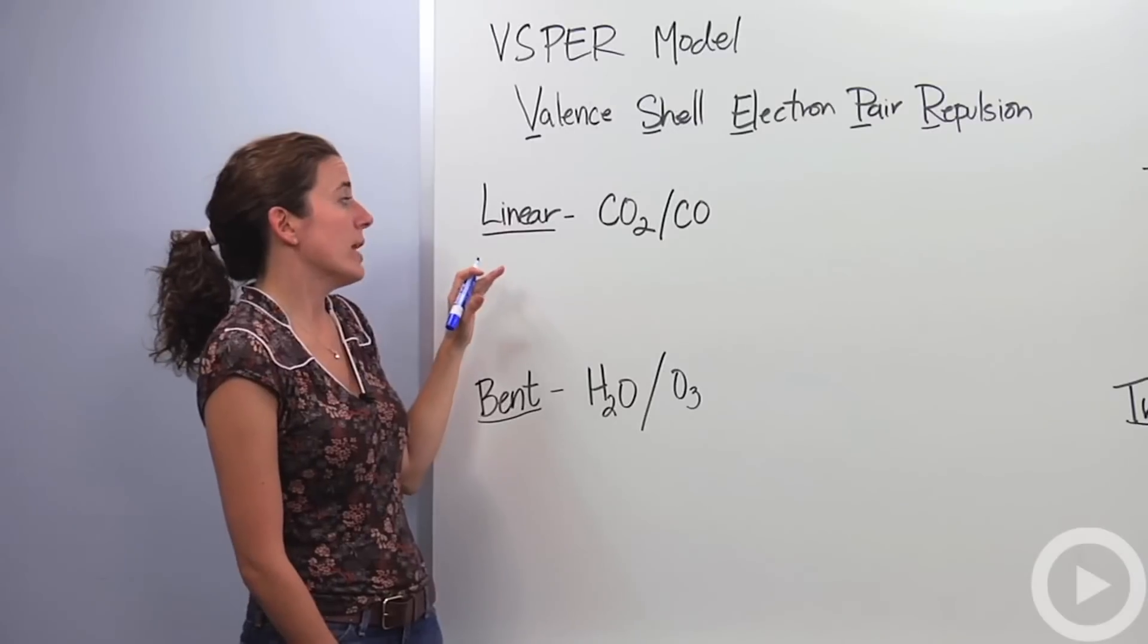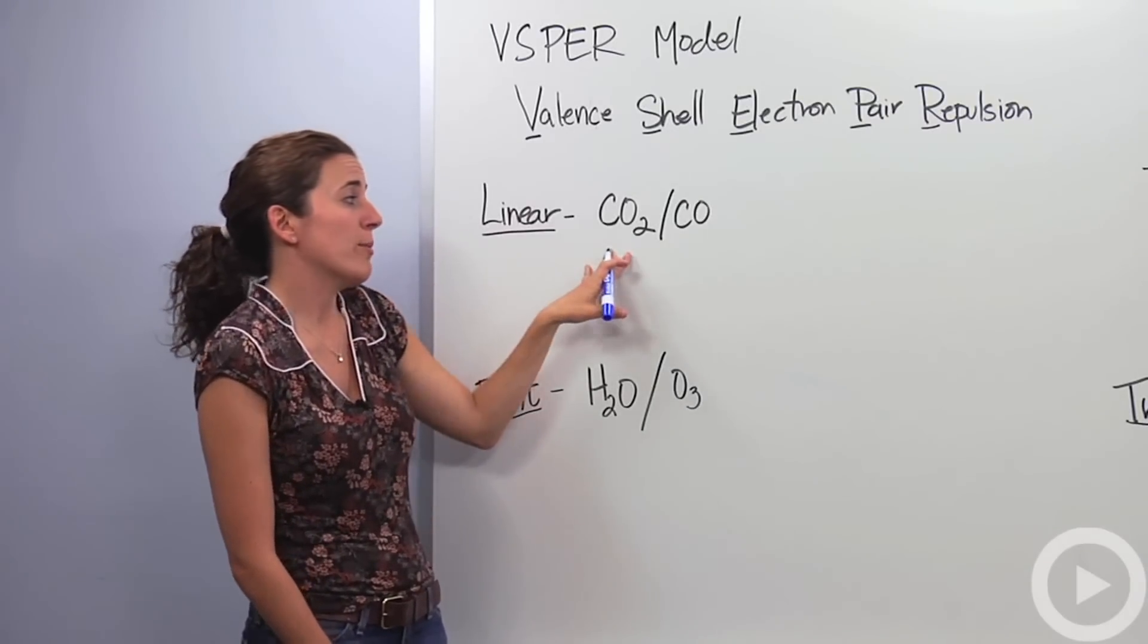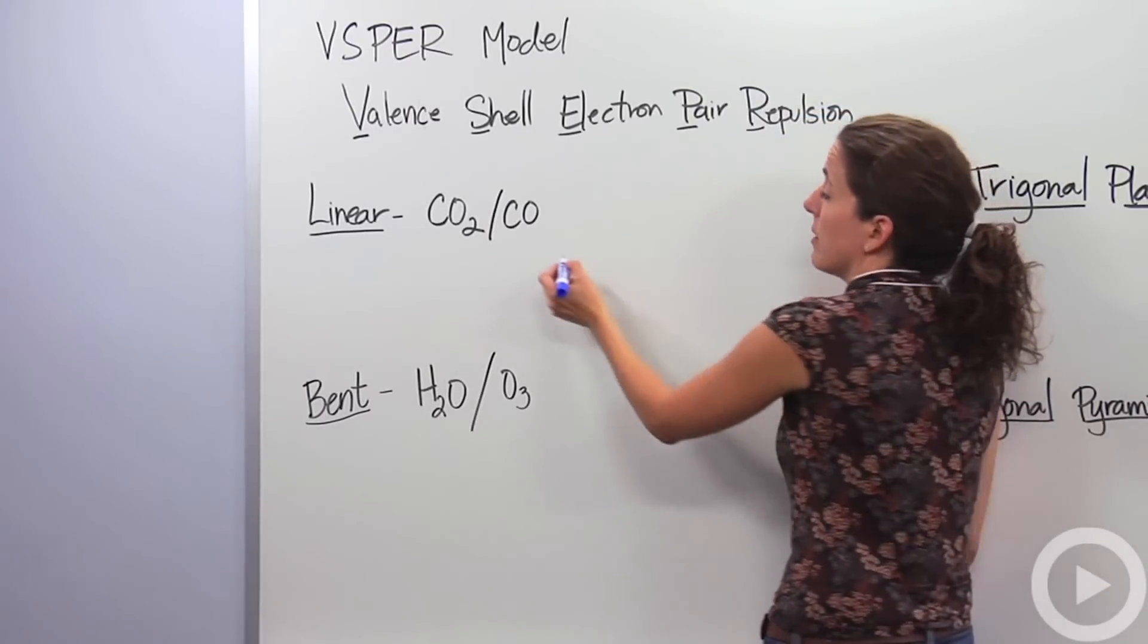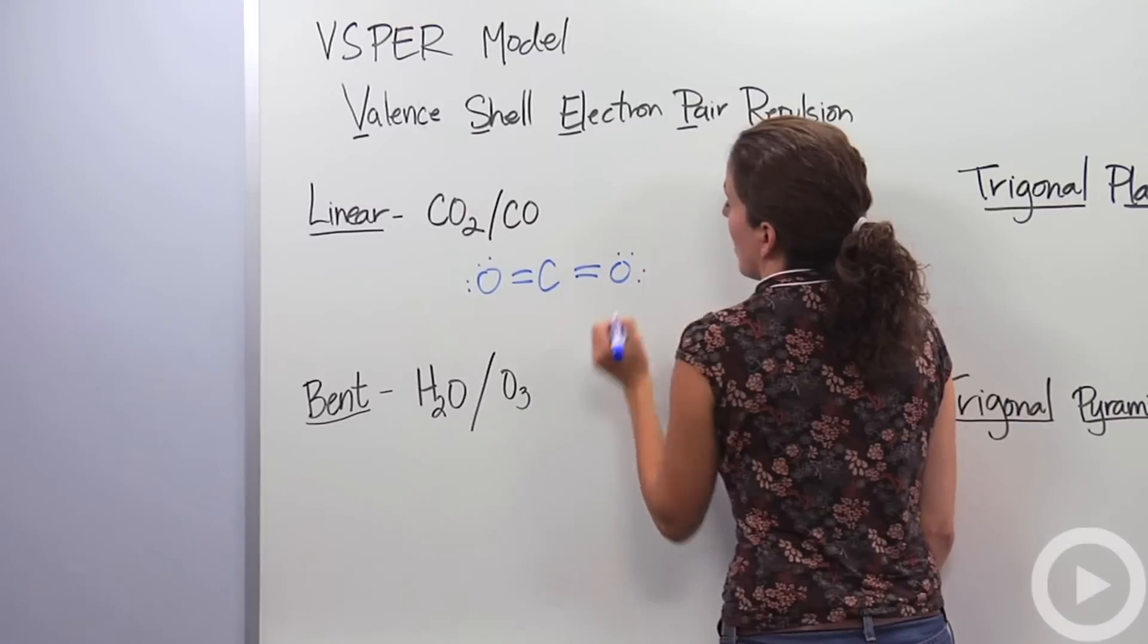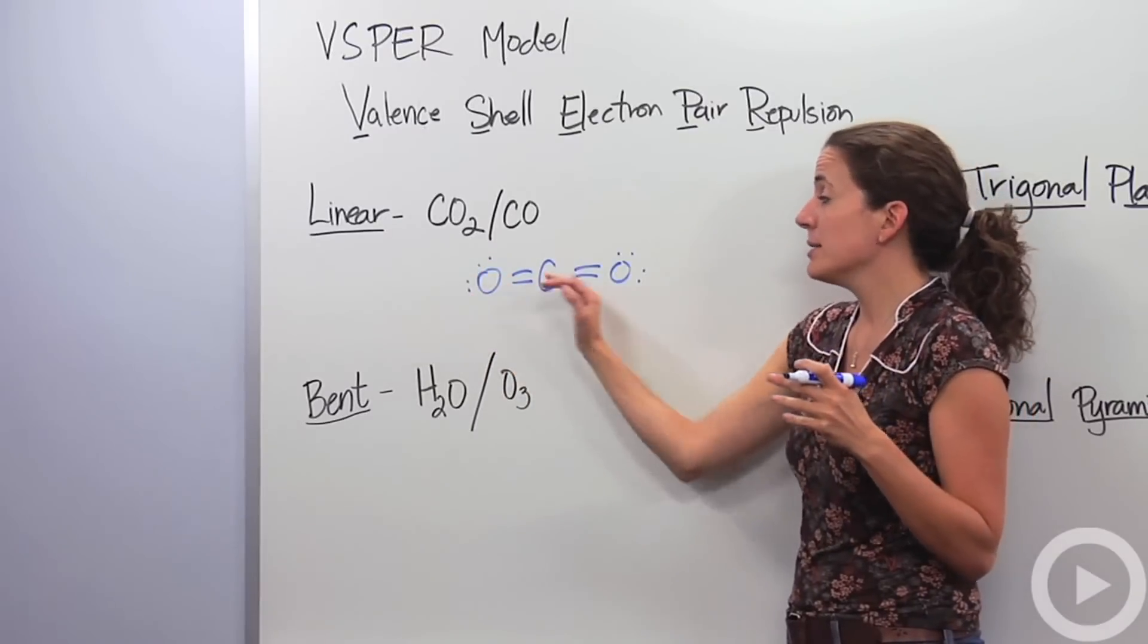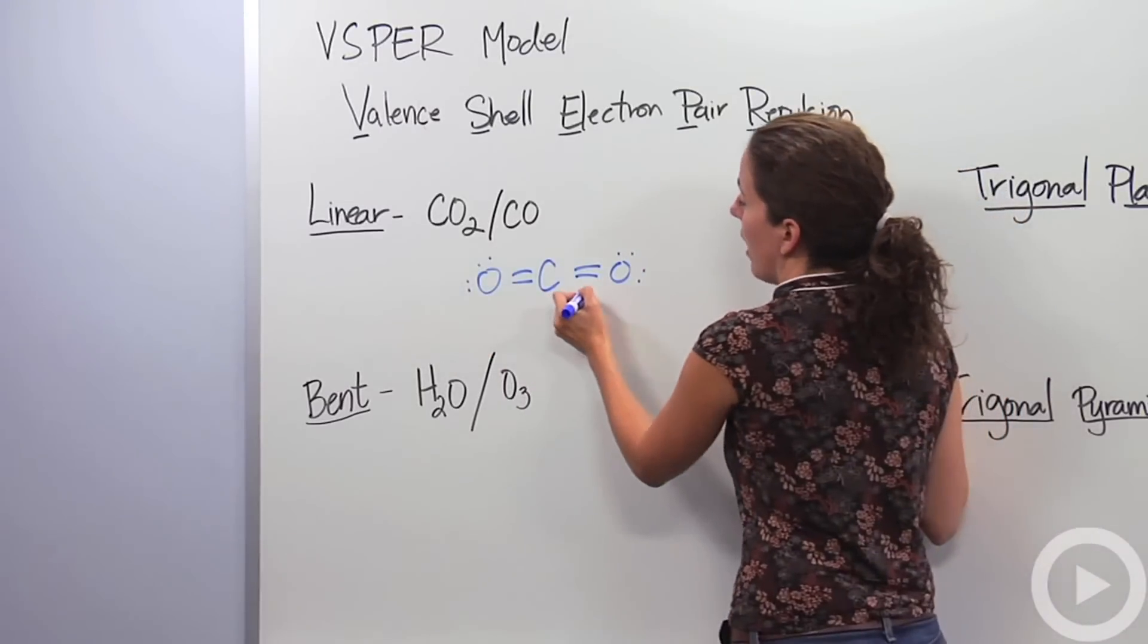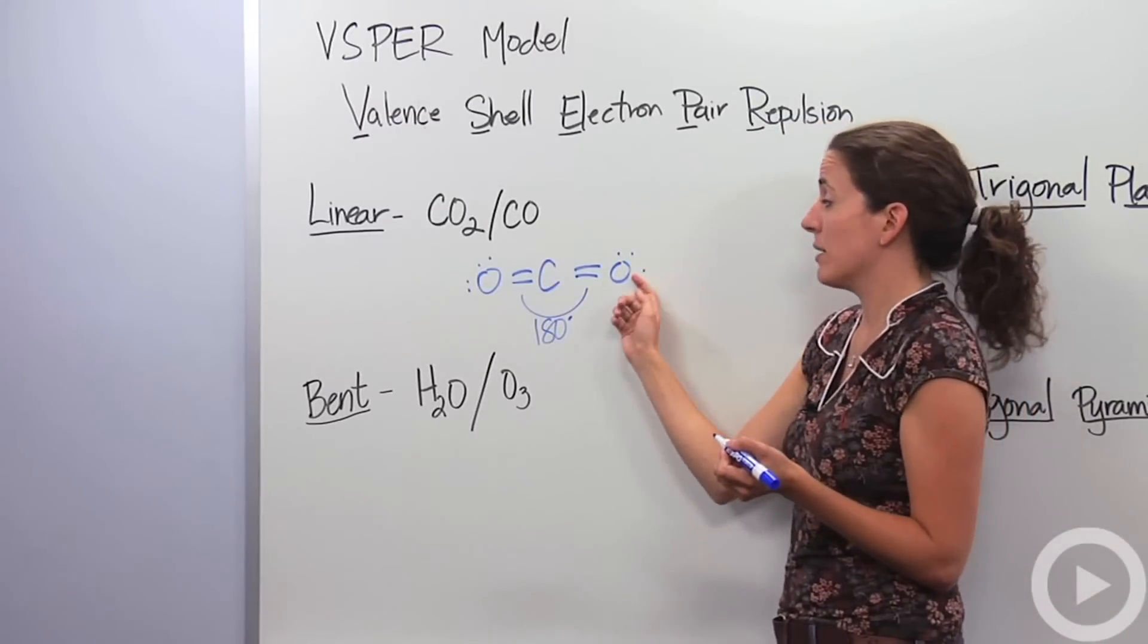One of the first shapes we want to talk about is a linear shape. Something that's linear is carbon dioxide and carbon monoxide. So carbon dioxide looks like this. We want these oxygens to be as far apart as possible. We know these electrons are repulsed by each other, meaning they're going to be as far apart as they can. So they actually create a linear form. This angle is going to be 180 degrees, as far apart from each other as they possibly can get, which makes our linear shape.